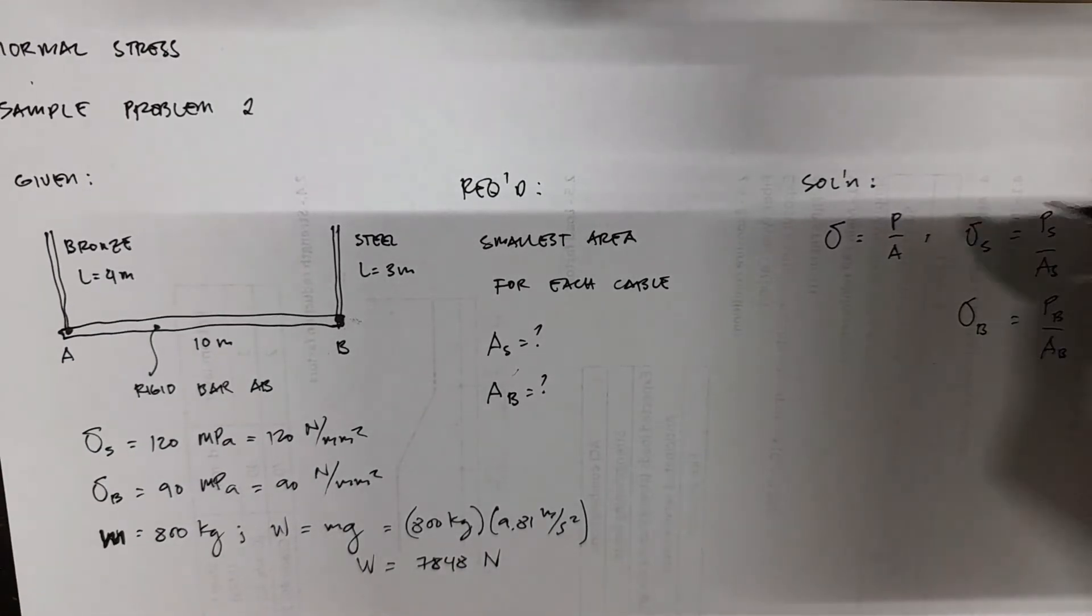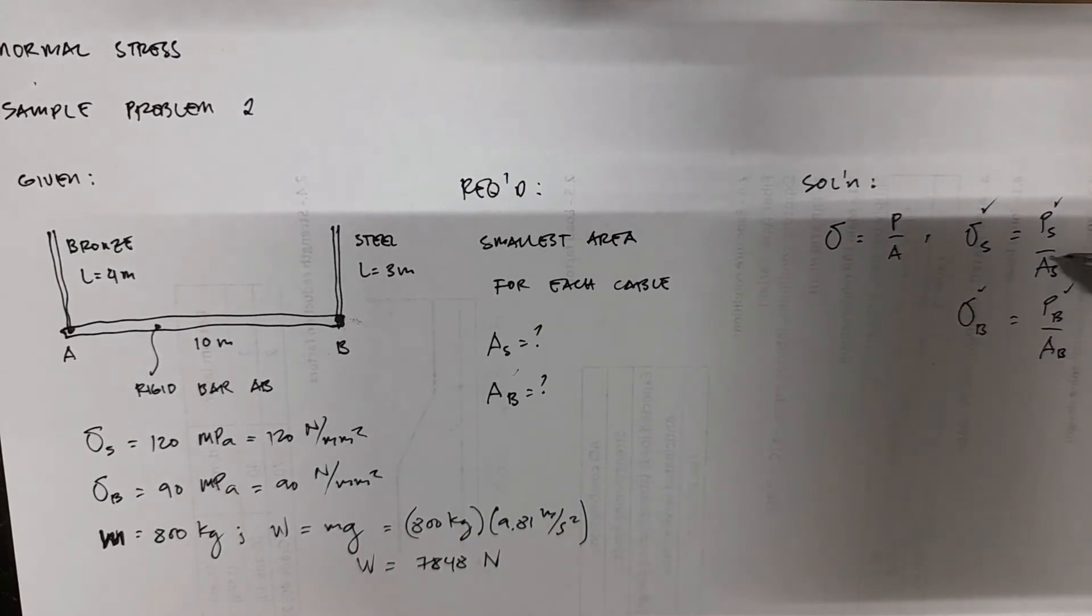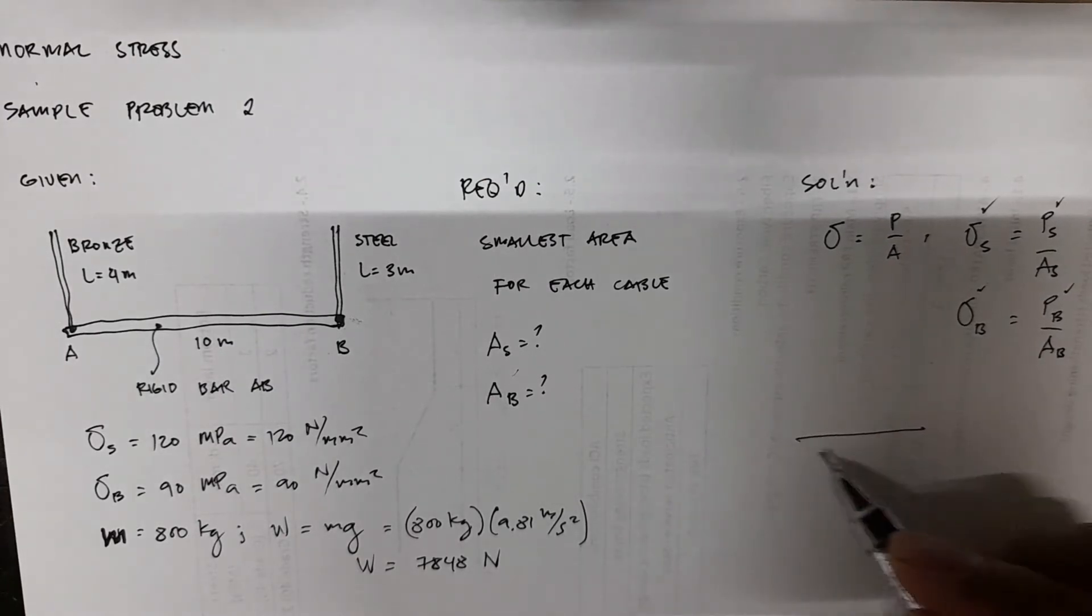So we're given with the sigma stresses. The P, we can find PS and PB using the equation of equilibrium. And then we have the A, which are required values. So using equilibrium, first we isolate the rigid bar.